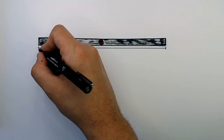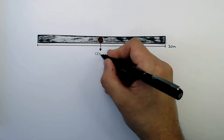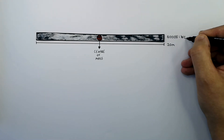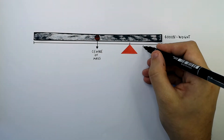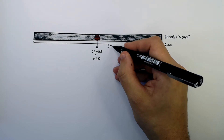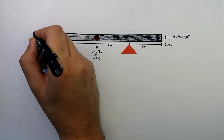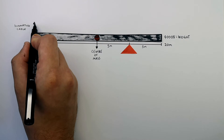What we've got here is a uniform 20 metre steel pole, and this is the centre of its mass. The weight of this steel pole is 4000 newtons. We place the pole on a pivot, whereby the pivot is 5 metres away from the end of the pole. The pivot to the centre of the mass is also 5 metres. This is a supporting cable holding the steel pole in the air, so it is balanced on the pivot.